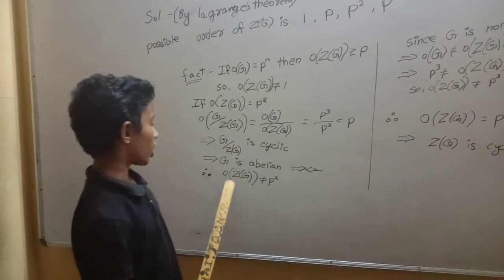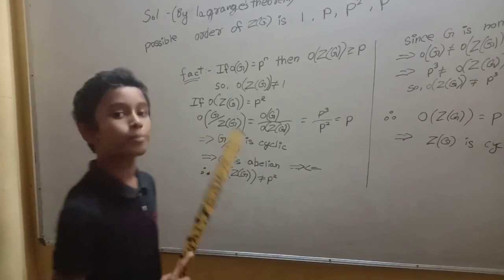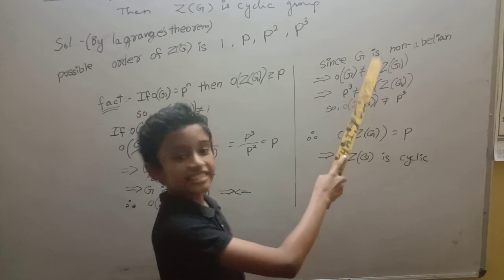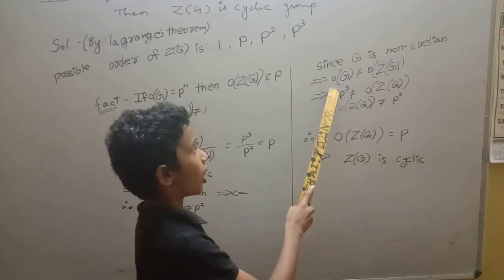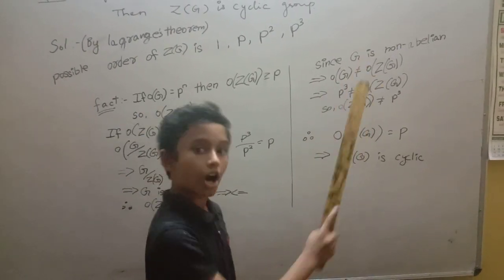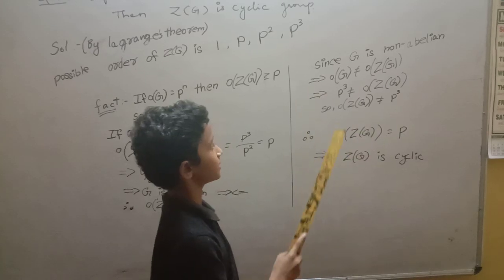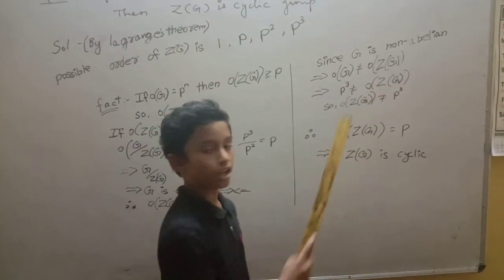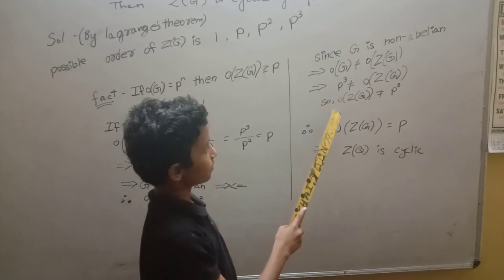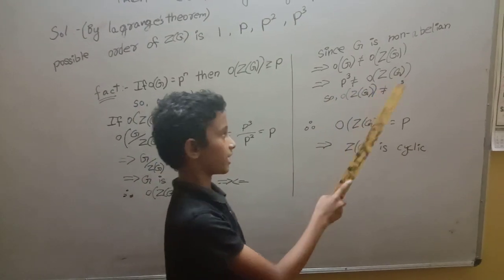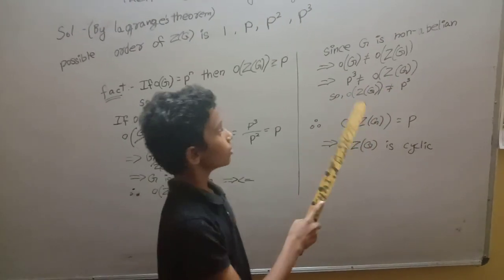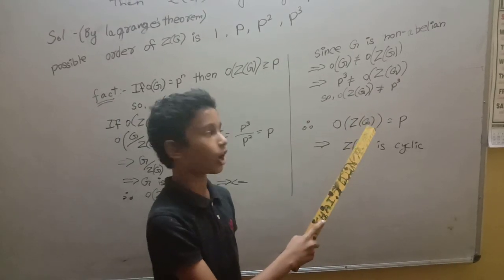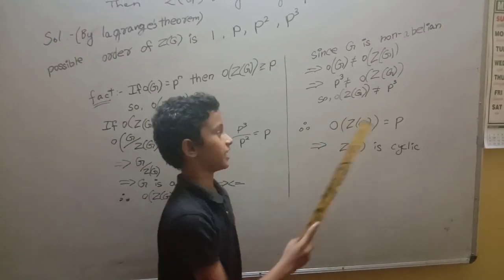So, the order of Z of G is not equal to P square. Since G is not abelian, the order of G is not equal to the order of Z of G, which implies P cube is not equal to the order of Z of G, so the order of Z of G cannot be P cube either. Therefore, the only possible order of Z of G is P.